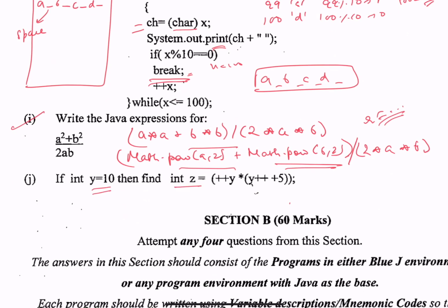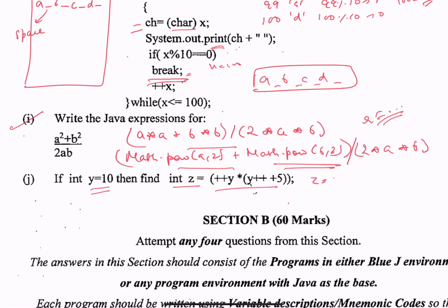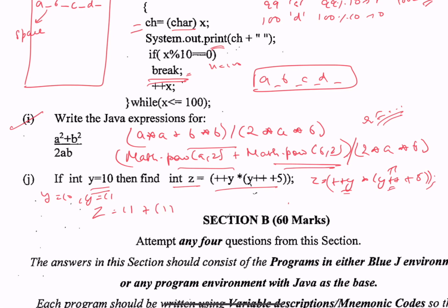Part j: if y equals 10, then z equals ++y * (y++ + 5). y starts at 10. The first term is ++y which is pre-increment, so y is increased first and then used — y becomes 11. Then in the parenthesis: y++ is post-increment, so y is used as 11 first then incremented to 12. So z equals 11 * (11 + 5) = 11 * 16 = 176. So z is 176.